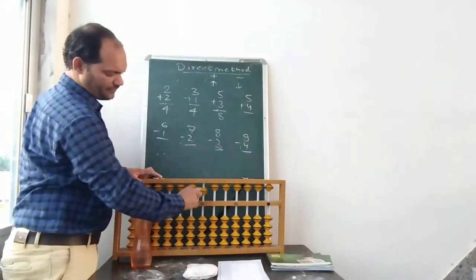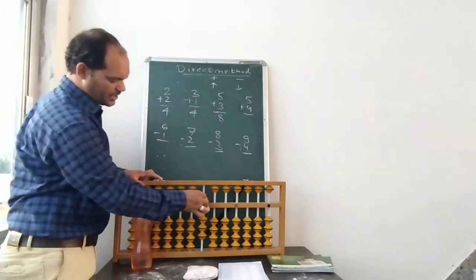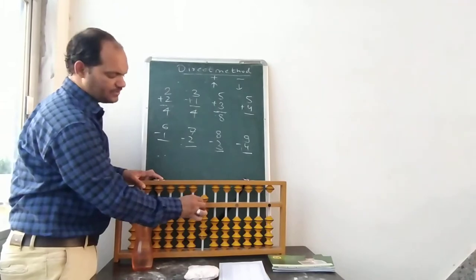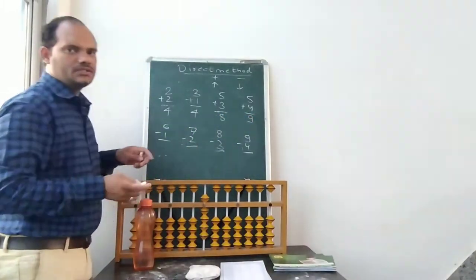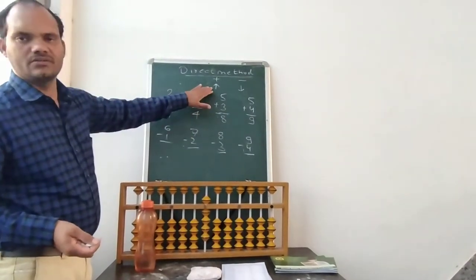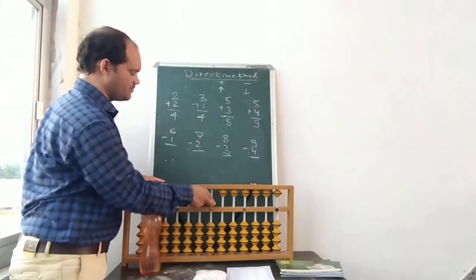5 plus 4. So 5 from up, 1, 2, 3, 4 from down. So now you can see on this line 4 bits from down and 1 from up. This indicates 9. So what is the answer? 5 plus 4 is 9. So this has shown you addition numbers. In addition we will do up, that's all. Now we will see subtraction numbers.